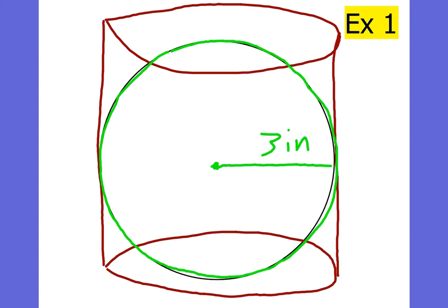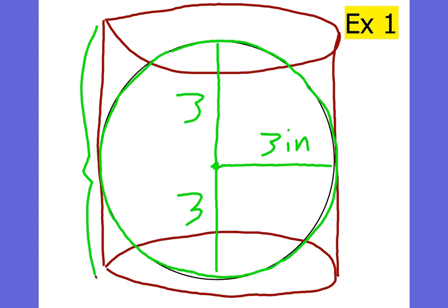In order to find the volume of a cylinder, you have to know its height. When you inscribe something inside of something else, a lot of times they share the same dimensions. So if I go up to the top of the cylinder, that's also 3 inches because it's the radius of the sphere, and if I go down it would be the same thing. That tells you the height is 6. Now that you know the height of the cylinder is 6, and it shares the same radius as the sphere, which is 3, you just find the volume of the cylinder and subtract the volume of the sphere.